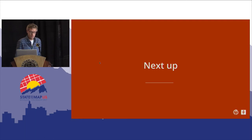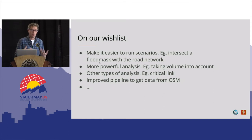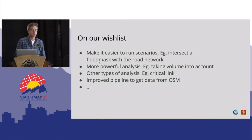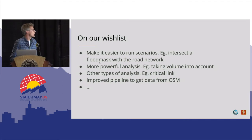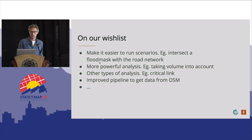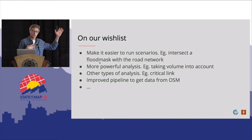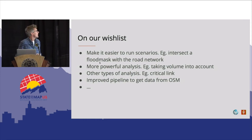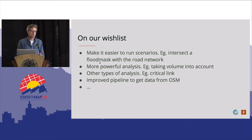RAM is an open source tool and we'd love to get more people involved and see more use cases. On our wish list: bringing in other datasets such as flood masks to do automatic intersection with the road network and see the accessibility impact. More powerful analysis — right now we don't take traffic volume into account, but we could. We'd also like to add critical link analysis, examining the criticality of individual network links. And we want an improved pipeline to get data from OSM — right now we rely on Overpass, which for bigger areas is a bit unstable.